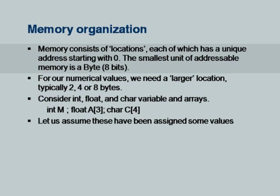First of all, the memory. We have seen that memory consists of locations, and each location has a unique address. These addresses, internally inside a computer, start with 0. So you have a 0th location, first location, second location, and so on. They typically go all the way to 2 to the power 32. That is actually called an address space.